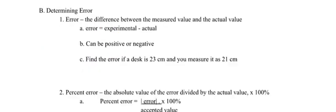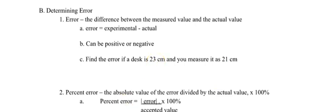When you are determining error, you are seeing how accurate you are — how close you are to the actual value. Error is the difference between the measured value and the actual value, meaning you subtract. Error = experimental value minus the true value. It can be positive or negative. For example, if a desk is 23 centimeters and you measured it as 21, your error is 21 − 23 = negative 2 centimeters.